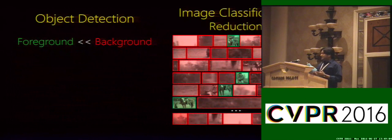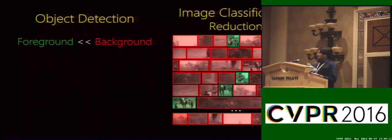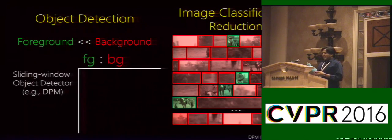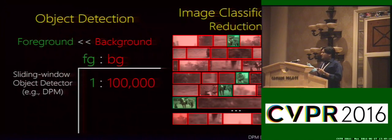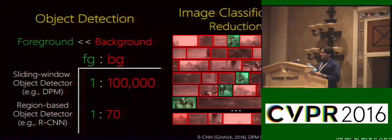The detection datasets have a large imbalance between annotated foreground objects and background examples. For sliding window detectors like DPMs, this ratio can be as high as 100,000 background to one foreground. And even though using regions has mitigated this problem a bit, the ratio can still be pretty skewed.